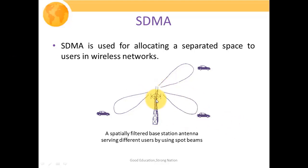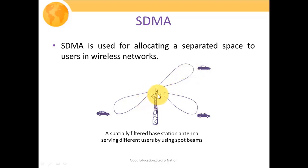In this particular scenario, we are exploiting multiple directional antennas. Users who are spatially apart can use the same time and the same frequency for transmitting their information. With the help of these directional or spot beam antennas, we restrict the overlapping of signals from multiple users, thereby avoiding interference.